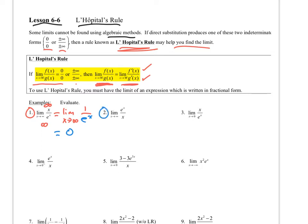Number 2 is very similar: we have infinity over infinity. Taking the derivatives gives e to the x all over 1, so this goes off to infinity — it does not exist. Number 3 is 0 over 1, so that's just going to be 0. We don't have to use L'Hopital's Rule because direct substitution already yields 0.